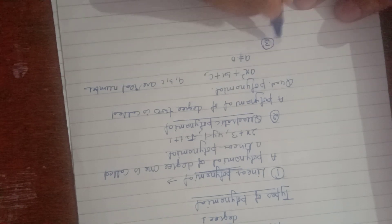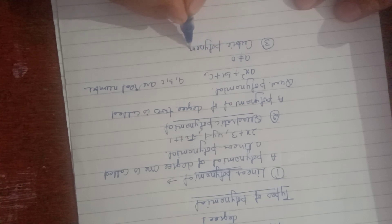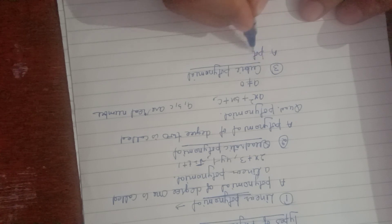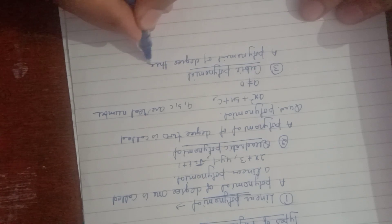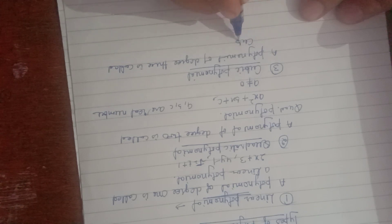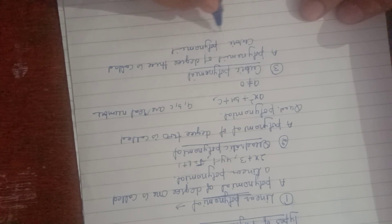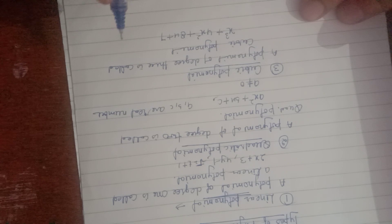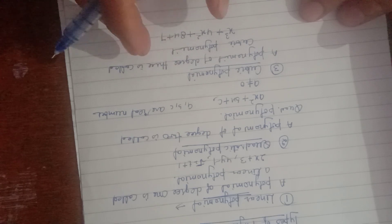The third type is a Cubic Polynomial. A polynomial of degree 3 is called a Cubic Polynomial. For example, x³ + 4x² + 8x + 7. The highest power of x here is 3, so it is a Cubic Polynomial.